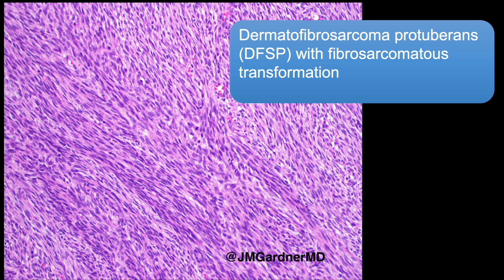Occasionally I'll see some DFSPs that have areas that are cellular and seem a bit more than regular DFSP, but they don't quite make the herringbone pattern. I've occasionally had to use comments in my report noting an area of increased cellularity that could potentially represent early fibrous sarcomatous change, but it's not definitive. I've seen some cases that felt like too much for regular DFSP but didn't quite get there, and I don't feel there's a great answer for those cases.